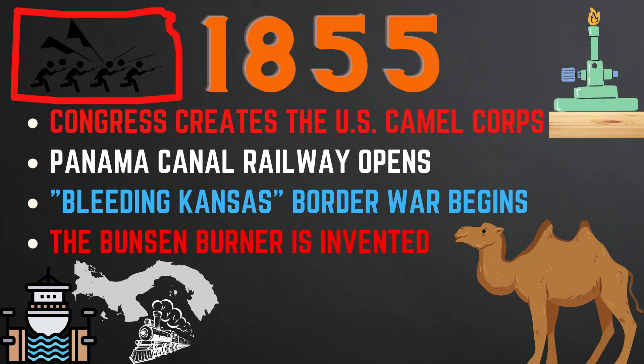In 1855, Congress created the U.S. Camel Corps, a U.S. Army experiment using camels as pack animals, though the idea never took effect. The Panama Canal Railway opened — the first railway to cross from one ocean to another. The Bleeding Kansas border war began, causing approximately 55 deaths and ultimately leading up to the Civil War. Also that year, the Bunsen burner was invented, soon used as a heat source in laboratories across the U.S.